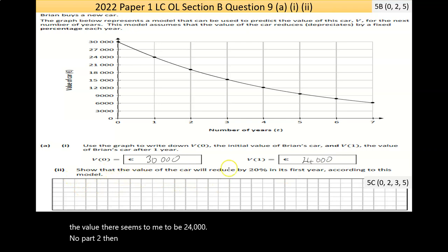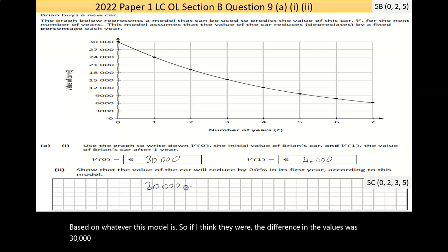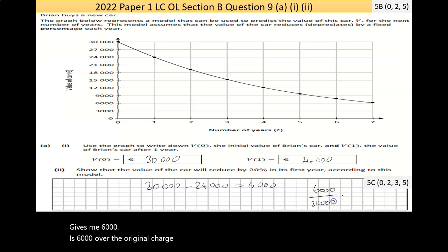Part 2 says, show that the value of the car will reduce by 20% in its first year based on this model. The difference in the values was 30,000 take away 24,000 gives me 6,000. Now, is 6,000 over the original 30,000 by 100? Is that 20%?